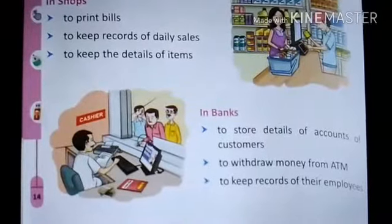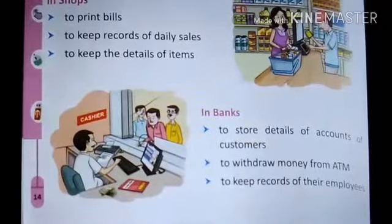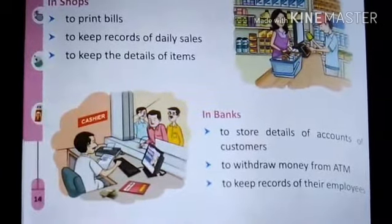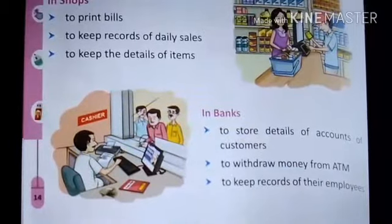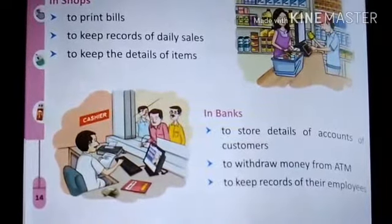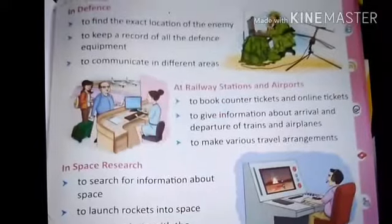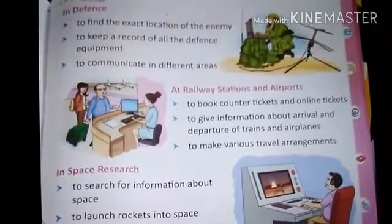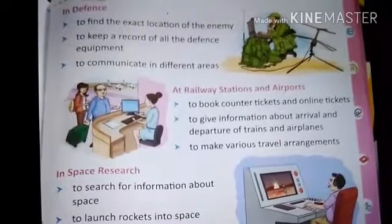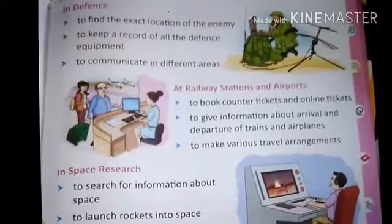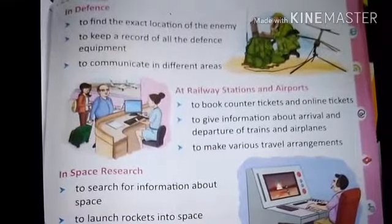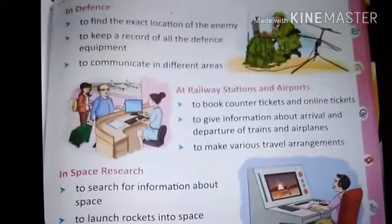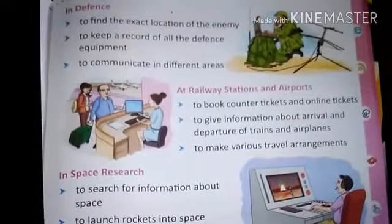Number 6, in banks. Computers are used to store details of accounts of customers, to withdraw money from ATM, and to keep records of employees. Number 7, in defense. Computers are used to find the exact location of enemies, to keep a record of all the defense equipment, and to communicate in different areas.